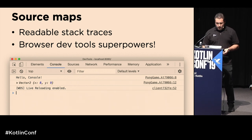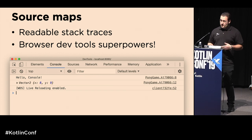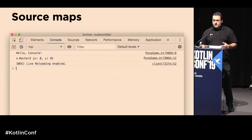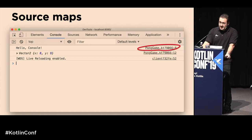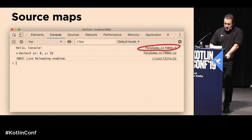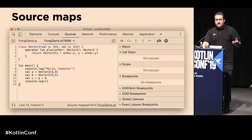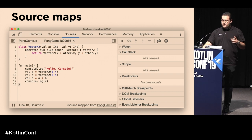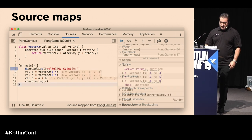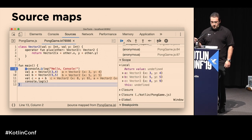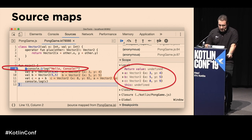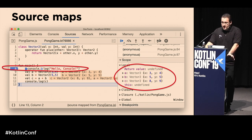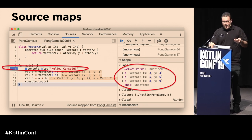For example, in a small pong game I right-click, inspect, open the console and can see debug messages referencing actual Kotlin files. Clicking through gives me Kotlin code directly inside the browser dev tools. These are interactive — I can set breakpoints, including sub-statement breakpoints (shown by small blue markers), see scope information, and each execution step shows the value a variable holds at that point.